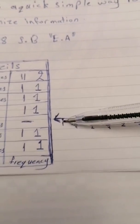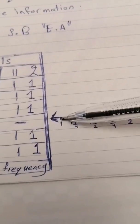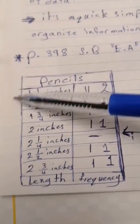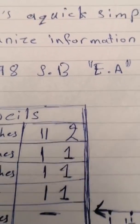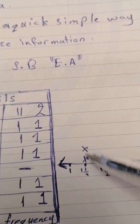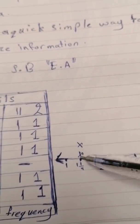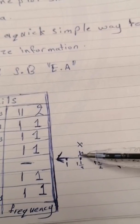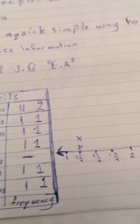Now, how to make a line plot: we place the lengths on the line. We start from number one. Do we have any pencils with one inch? No. Do we have any pencils with one and a quarter inches? Yes — how many? Two. So we put two X's here. Each X mark means we have one pencil of that length. So two X's means we have two pencils with this length.